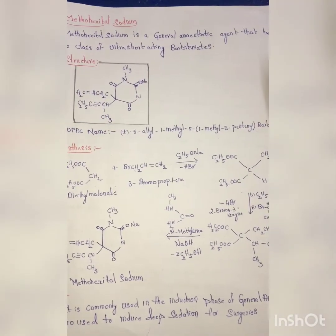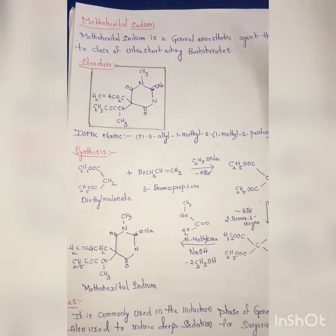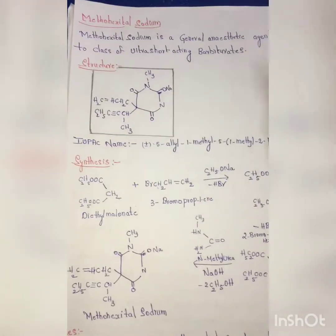So one more drug that we have studied under the class of barbiturates is barbital, right? It is a long acting barbital. Now this methohexital sodium will be ultra-short acting barbiturates. What is the general structure for the barbiturates?